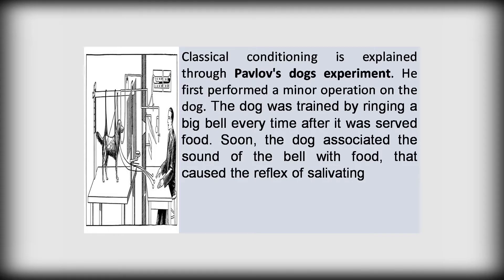Classical conditioning is explained through Pavlov's dog experiment. He first performed a minor operation on the dog. The dog was trained by ringing a bell every time after it was served food. Soon the dog associated the sound of the bell with food, which caused the reflex of salivating.